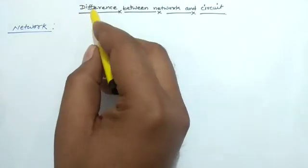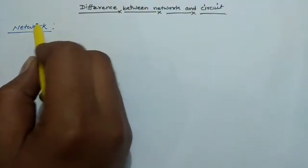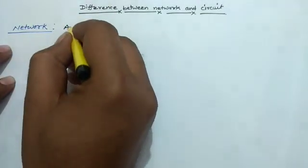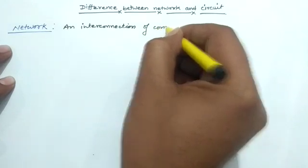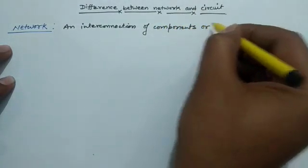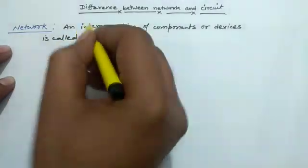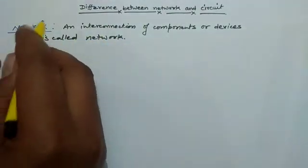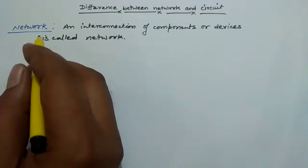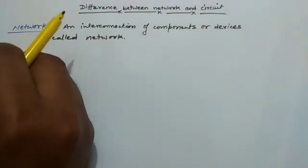Hello friends, our today's topic is difference between network and circuit. A network is an interconnection of components or devices. Network and circuit are sometimes taken in the same sense, but both these words have different meanings.